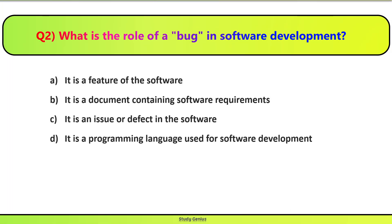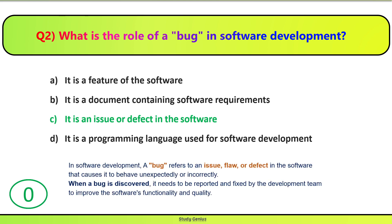Question 2. What is the role of a bug in software development? Software development mein bug kya hota hai? Correct answer is C. A bug is an issue or defect in the software that causes it to behave unexpectedly or incorrectly. When a bug is discovered, it needs to be reported and fixed by the development team to improve the software's functionality and quality.